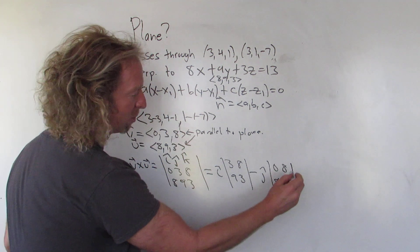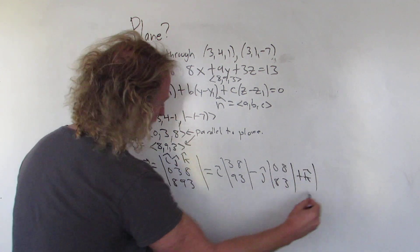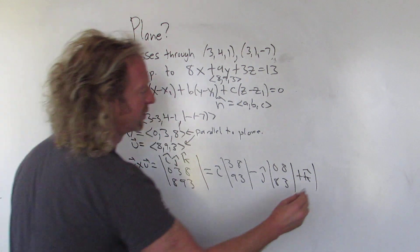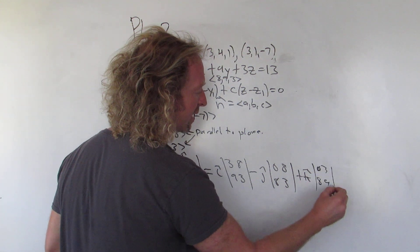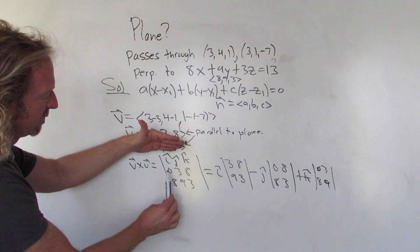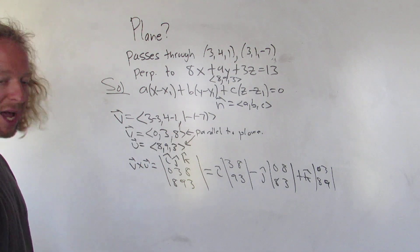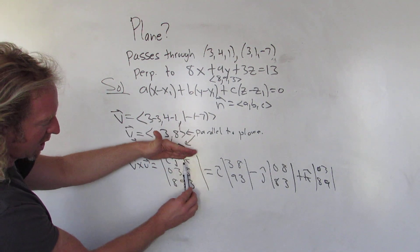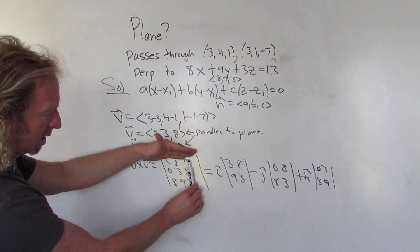And then k hat. So plus k hat. 0, 3, 8, 9. So 0, 3, 8, 9. Like a phone number. 0, 3, 8, 9. Let's check that. So i hat. Oh, looks okay. J hat. Looks okay. K hat. Looks okay.